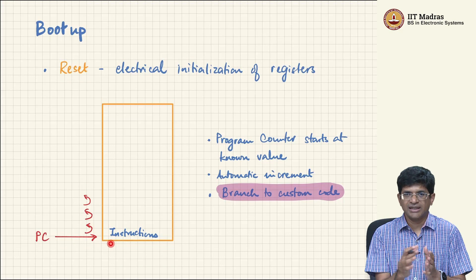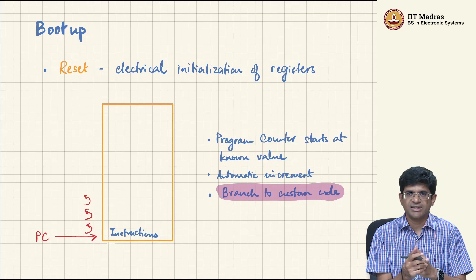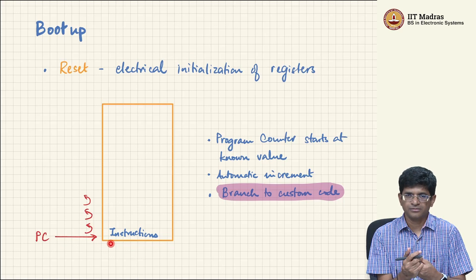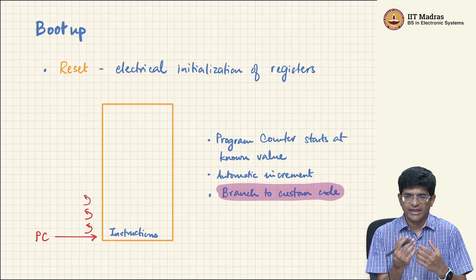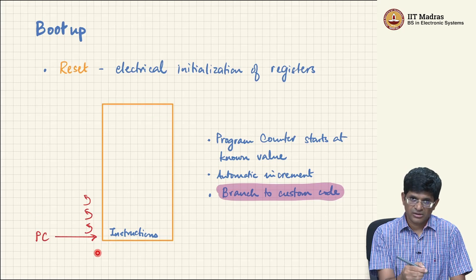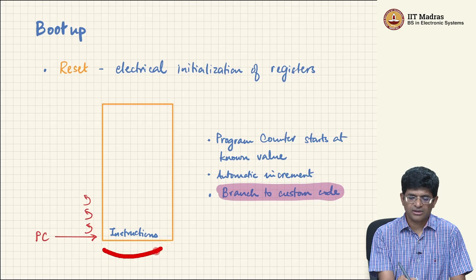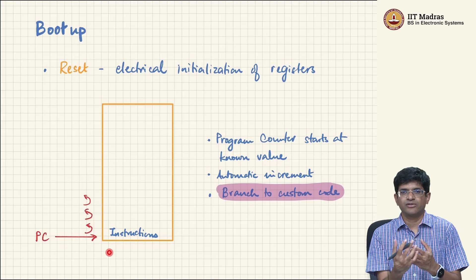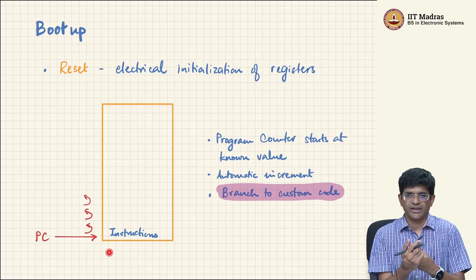Automatically, the address corresponding to that instruction goes out onto the address bus, the instruction comes back into the system and gets executed. So if we can ensure that at reset the program counter is given a value which brings back a valid instruction from the bus, we have some level of control over how the system is going to operate.